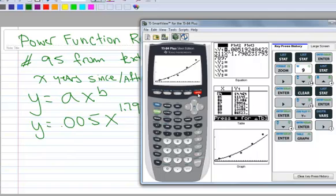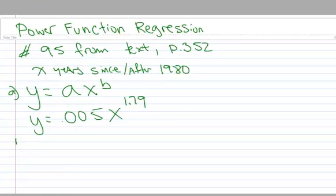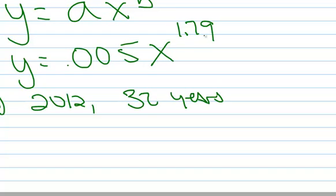Okay, part B says, let's see, how many employees did I have in the year 2012? Okay, so here's part A and part B wants to know the number of employees in 2012. So 2012 is 32 years since 1980. So my x is going to be 32.